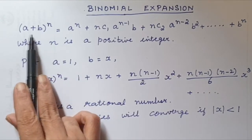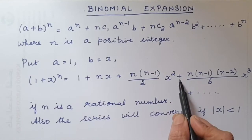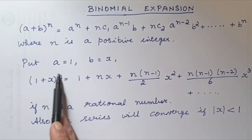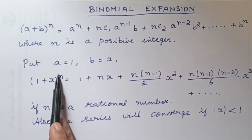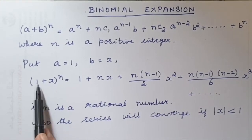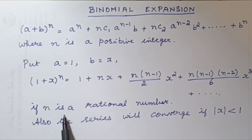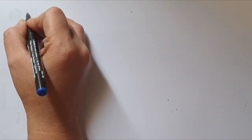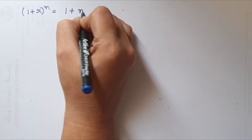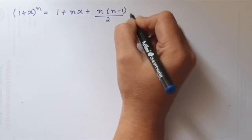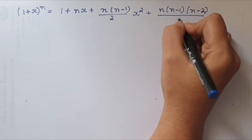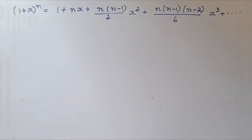We have two binomial expansions: the first one requires the power to always be positive, but in the second expansion, the power can be negative or a rational number. However, when using the second expansion, you must make sure the expression starts with 1 — it has to be (1 + x). The final expansion is: (1 + x)ⁿ = 1 + nx + n(n−1)/2 · x² + n(n−1)(n−2)/6 · x³. Now we will see how to apply this expansion.